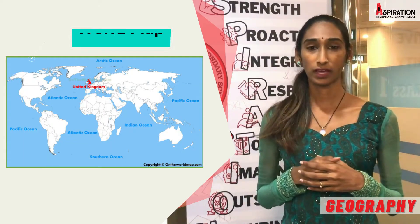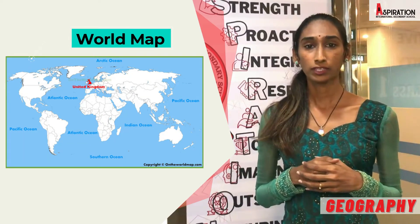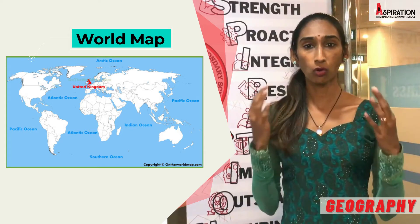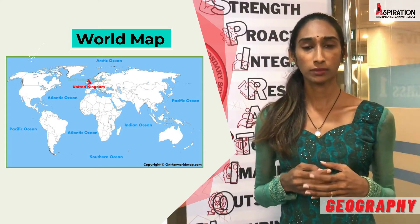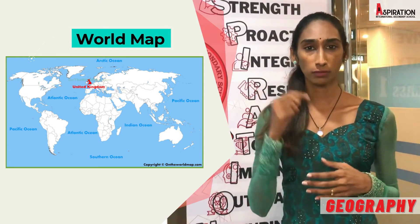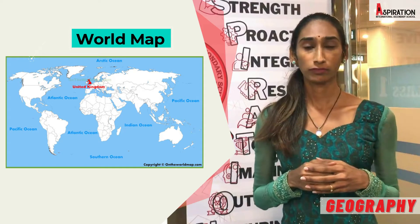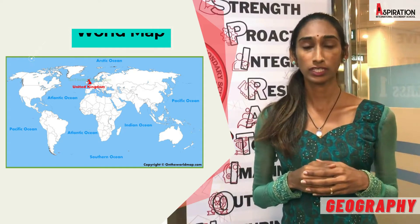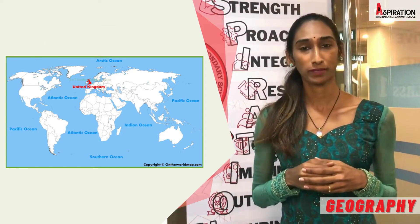Check out this map. Not much details, but you can see the whole world and the United Kingdom looks very small. Indeed, any map of the entire world is going to be a small scale map.